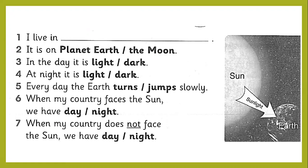In the day we have the sun, so it means we have light. When the sun goes, it means we have dark night. At night it is dark — we don't have sunlight. Every day the earth turns slowly. When my country — Saudi Arabia — faces the sun, we have day. When my country does not face the sun, we have night. So you can write: I live in Saudi Arabia.